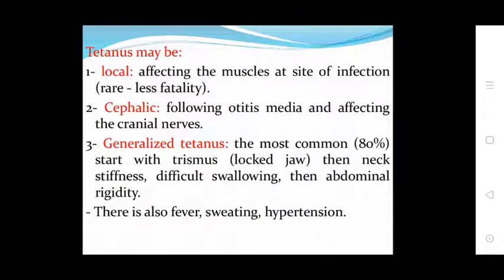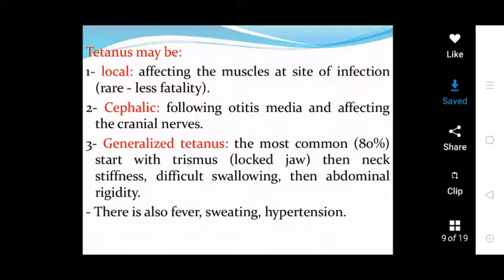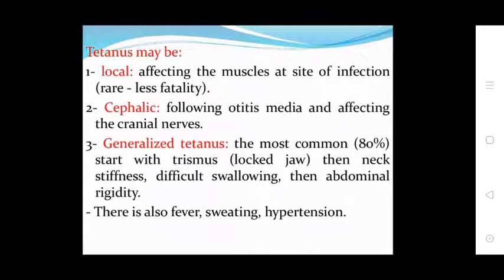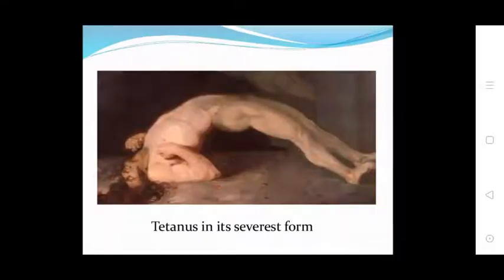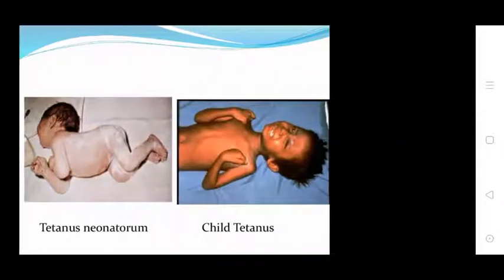Tetanus may be local, affecting the muscles at the site of infection, with rare and less fatality. Cephalic tetanus follows otitis media and affects the cranial nerves. Generalized tetanus is the most common form, accounting for 80 percent of cases, starting with trismus (locked jaw), then neck stiffness, difficulty swallowing, abdominal rigidity, fever, sweating, and hypertension. Neonatal tetanus is the generalized form occurring in non-immunized mothers via the umbilical cord stump in developing countries and is the severest form.